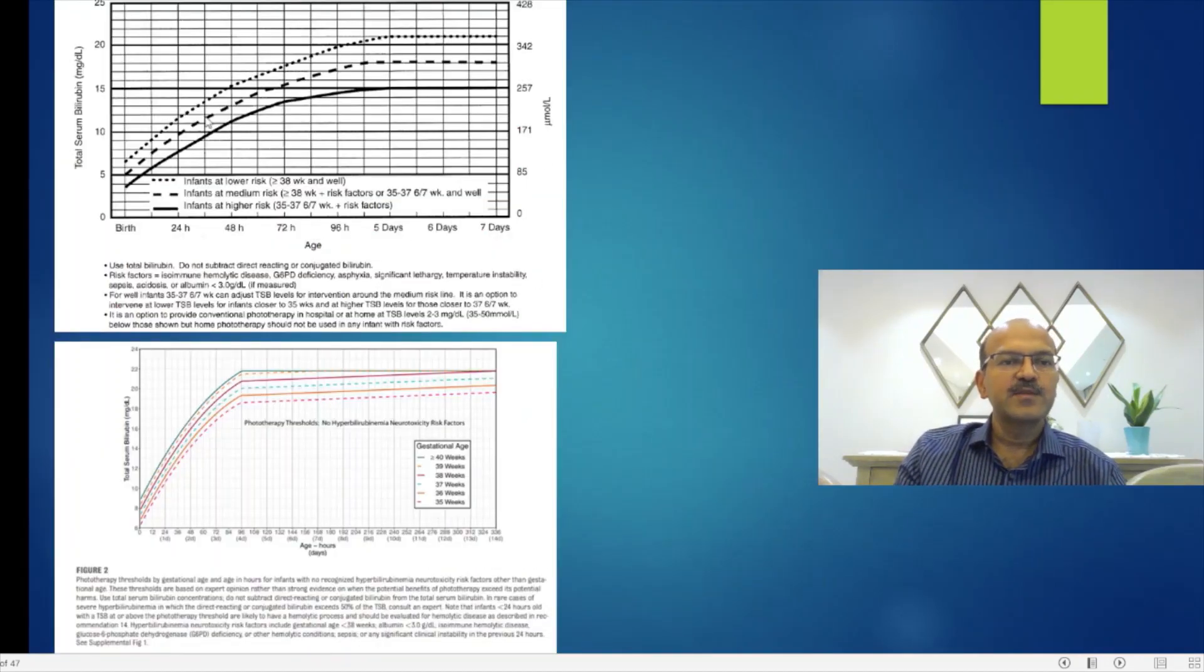A comparison of the previous chart which was used shows the high risk, medium risk, and low risk categories. Obviously, we were clubbing the premature babies and the term babies with neurotoxicity risk factors according to the level. This is more clear cut.